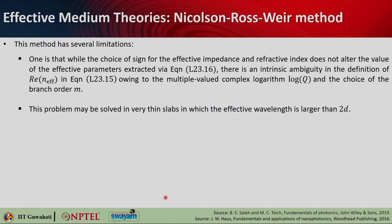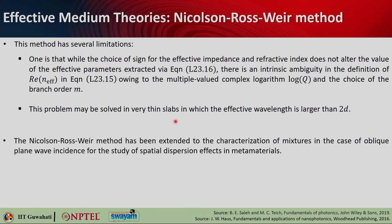The first observation is that the choice of sign for the effective impedance and refractive index does not alter the values of the effective parameters obtained via these equations. There is some intrinsic ambiguity in the definition of n_effective because it comes from the multi-valued complex logarithm and the choice of branch order m. This problem may be solved for very thin slabs where the effective wavelength is much larger than 2d. This method has been extended to characterization of mixtures under oblique plane wave incidence for the study of spatial dispersion effects in metamaterials.